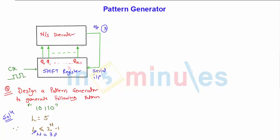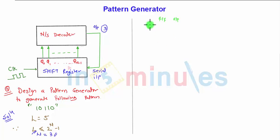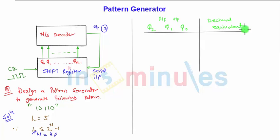For that, let us design a truth table. A 3-bit shift register requires 3 flip-flops, so the flip-flop outputs will be Q2, Q1, Q0, and their decimal equivalents. The pattern to generate is 1 0 1 1 0. In each clock cycle, this pattern shifts: in the second clock cycle this one shifts to the next position.